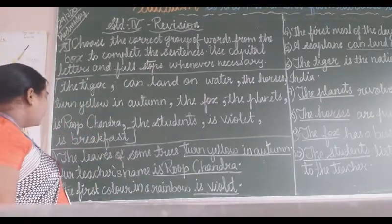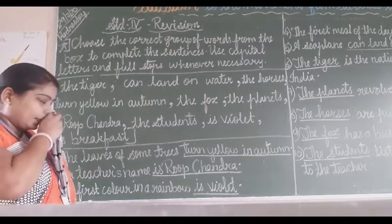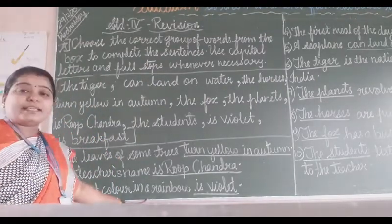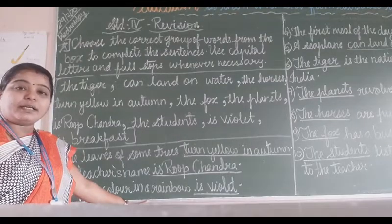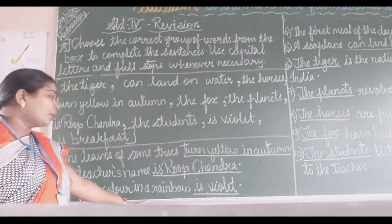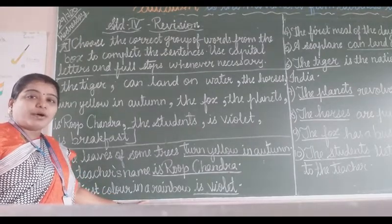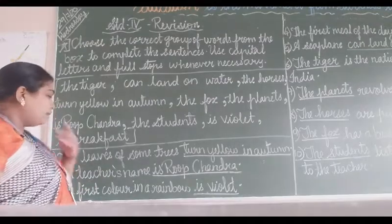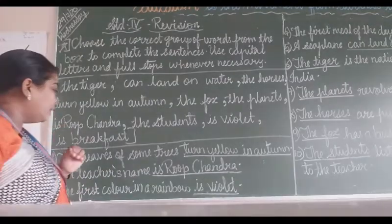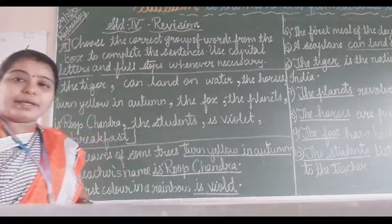The first colour in the rainbow is dash. Which is the first colour in the rainbow? From the options, it is violet. So the complete sentence is: The first colour in the rainbow is violet.